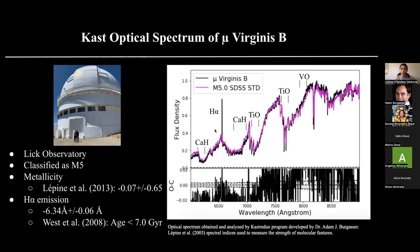On the spectrum itself, we can see that there are various dips. These are called absorption lines, and absorption lines are caused by different metals or molecules that may be present in the star. Something really important is this hydrogen alpha emission line, because this is very rare, and it is also an indication that if this object has this hydrogen alpha emission, then it is very young. According to the West et al. 2008 paper, the age at which this hydrogen alpha emission line disappears is seven giga years. But since Mu Virginis B's spectrum has this, that means it is younger than seven giga years old.